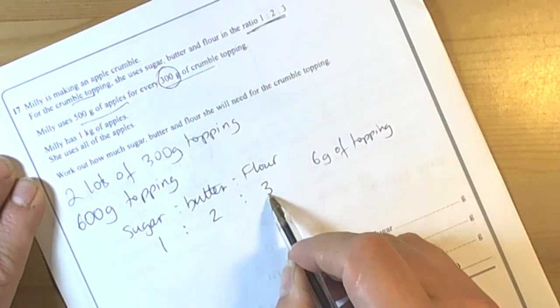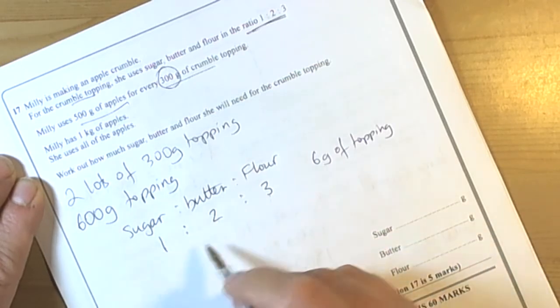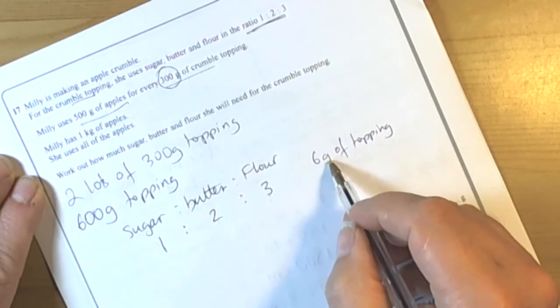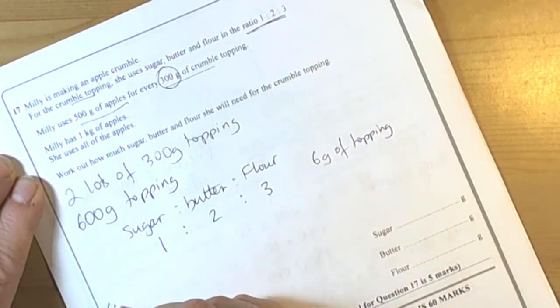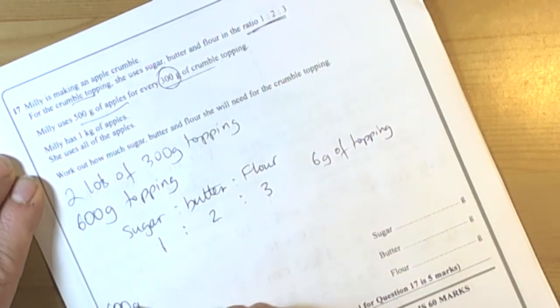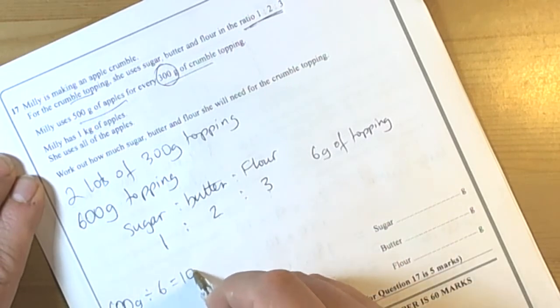we're going to need 3 grams of flour, 2 grams of butter, and 1 gram of sugar. So if we see how many 6 grams go into the 600, then we can work out what our multiplying factor is. So 600 divided by 6 is 100.